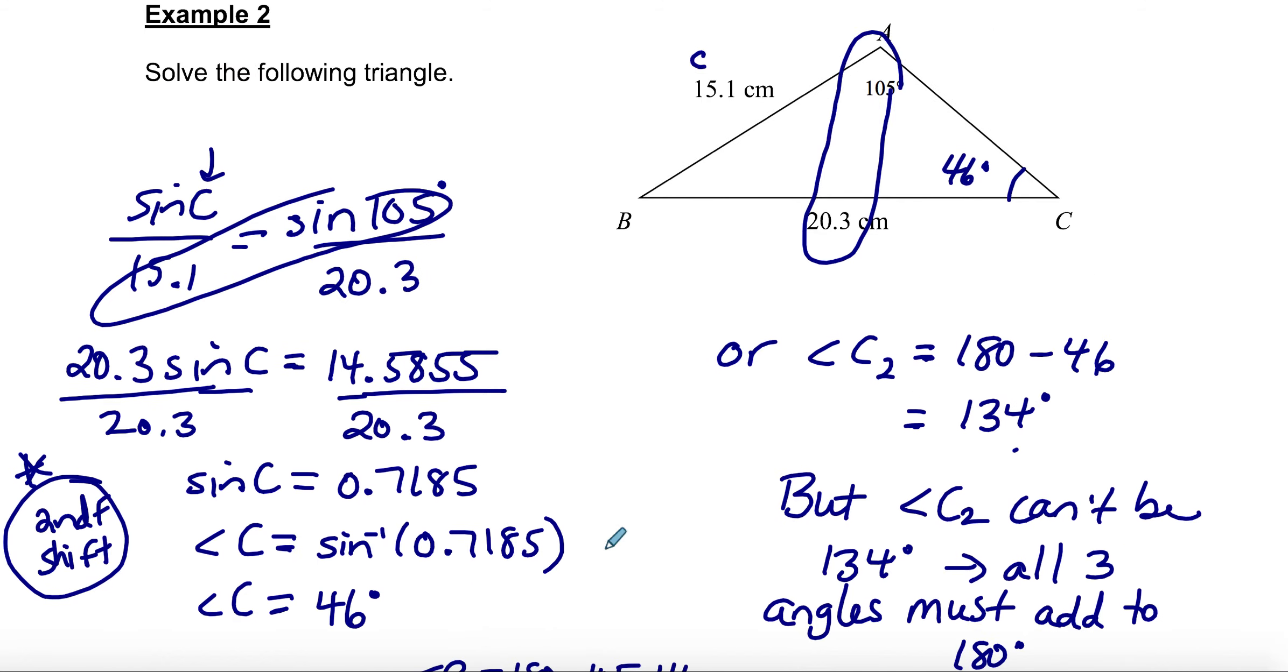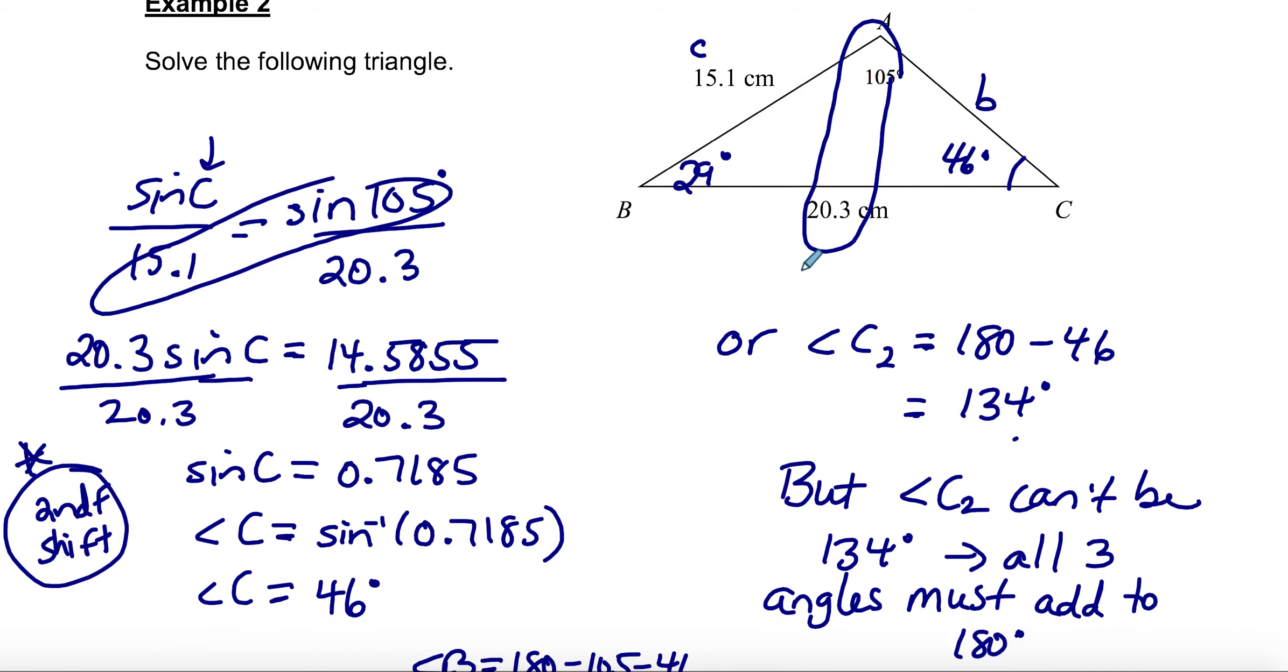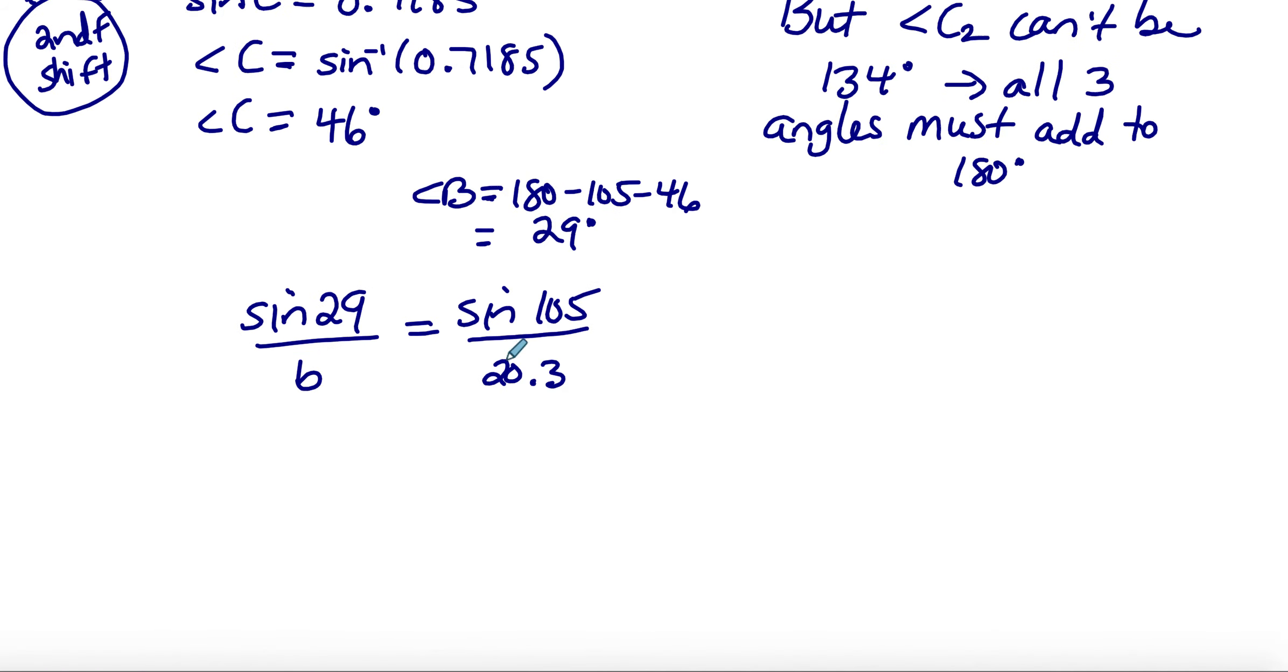The only thing that we don't know, what are we still missing? We still don't have side B. So we can do sine of 29 over B equals sine of 105 over 20.3. We could do the sine law again to find side B. Again we cross multiply, so sine of 105 B, sine of 29 times 20.3 is 9.8416. Divide both sides by sine 105. And for B we get 10.2 centimeters.